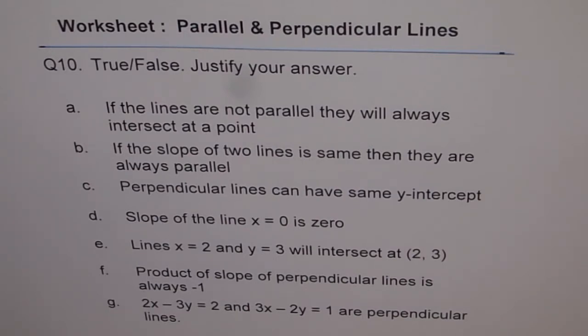F. Product of slope of perpendicular lines is always minus 1. G. 2x minus 3y equals to 2 and 3x minus 2y equals to 1 are perpendicular lines.